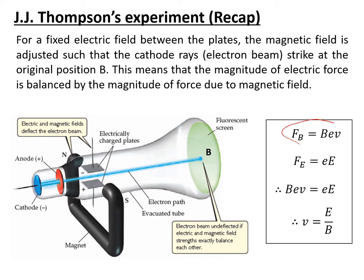If you balance them just right, you can have a cathode ray that passes through undeflected. Using the equations in the box: the magnetic force is F = Bev, where B is the magnetic flux density, and the electric force is F = eE. Equating those two — because if undeflected those forces must balance — Bev = eE, e cancels, and we're left with velocity v = E/B, the electric field strength divided by the magnetic flux density. Hold that equation in your memory.